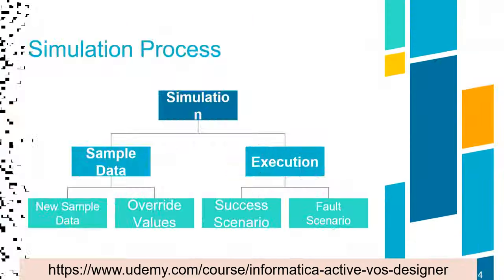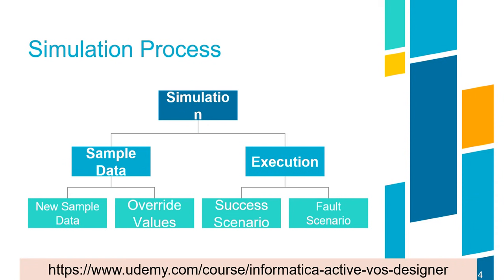As part of simulation, there will be two phases. The first phase is preparing sample data and then performing actual execution. When preparing sample data, we create new data, but there are scenarios where we need to override values. During execution, we will cover two kinds of basic testing: success scenarios and error or fault scenarios.